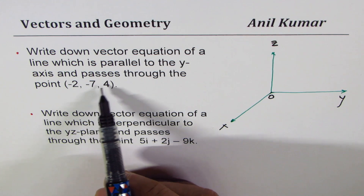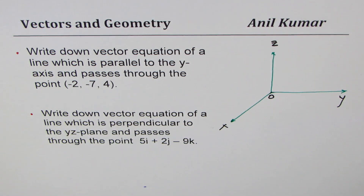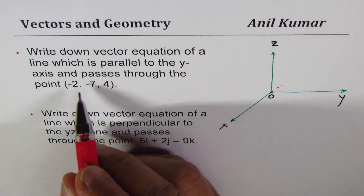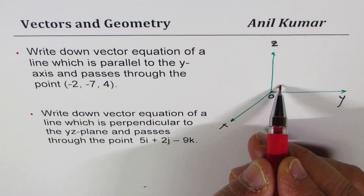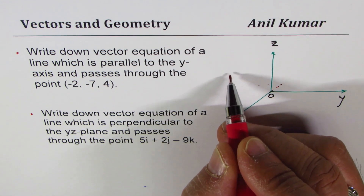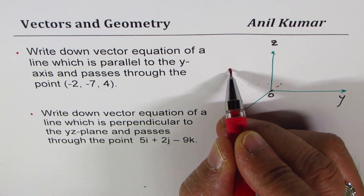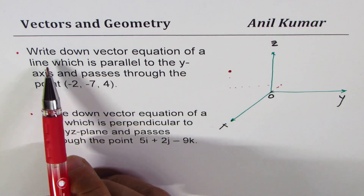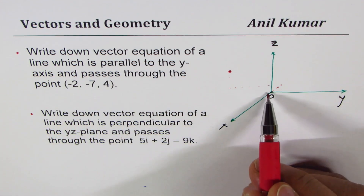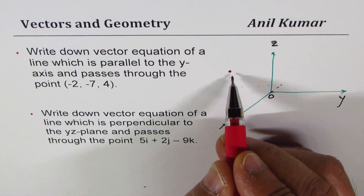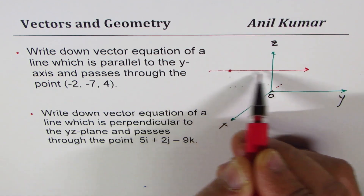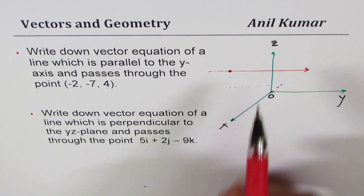When I say the point is (-2, -7, 4): minus two means you go two units in this direction, minus seven means you go seven units here, and four will be somewhere here. So we have a point right there. Now we need to write the vector equation of a line parallel to the y-axis, which means it goes like this — parallel to the y-axis.